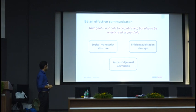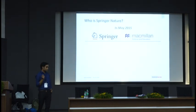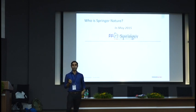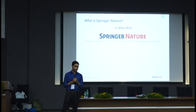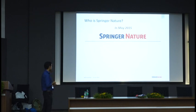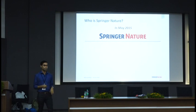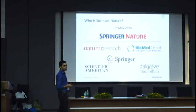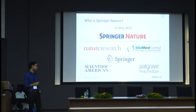Before we move on to the main part, I'll give a very brief introduction to what or who Springer Nature is. In May 2015, Springer Science and Macmillan Education merged and formed a company called Springer Nature. We publish some of the major imprints in academic and scholarly publishing, which includes Biomed Central, Springer, Nature Research, Scientific American, and Palgrave.